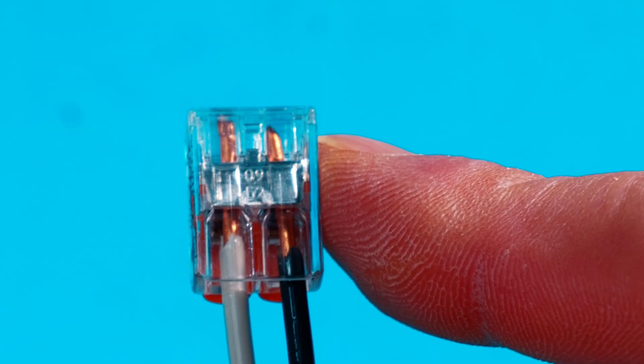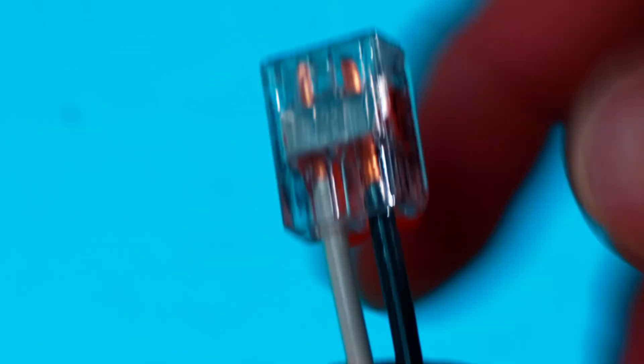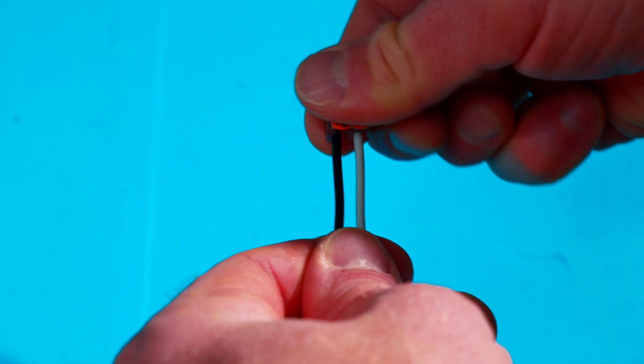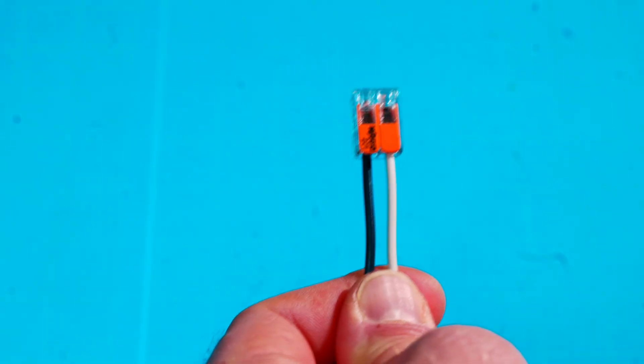That is the huge advantage to having the see-through Wago 221s. You can really give it a good inspection just like that, and you're like, okay, I'm happy with that. It is tight. Now it's ready to push back into the wall.